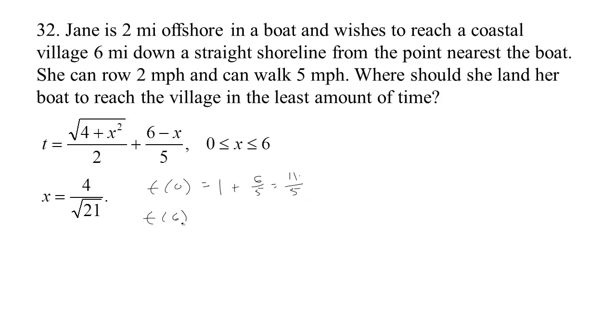At the other end point, when x is six, this is zero and six squared is 36 plus four is 40. So we have the square root of 40 over two. Of course, four is a perfect square and this is four times ten. So we have two root ten over two. So that's the square root of ten. That's more than three. So this is even longer. That was the case when she rode all the way and she's not a very fast rower in the water there.